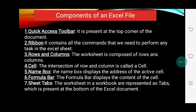Next are rows and columns. The worksheet is composed of rows and columns. Rows are the group of cells placed horizontally; columns are the group of cells placed vertically. A worksheet has 10,48,576 rows and 16,384 columns. Next is the cell: the intersection of a row and a column. The currently selected cell is called the active cell.